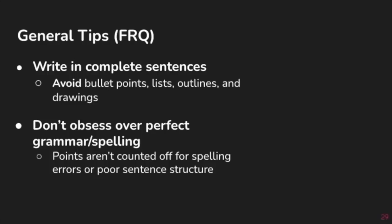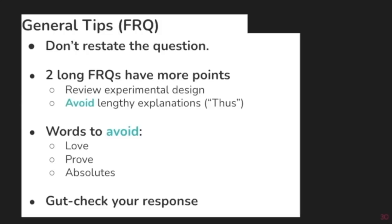We're getting into some general tips. Remember to write in complete sentences. You do have to write in sentence form, but you don't need to write full paragraphs. Make sure you avoid bullet points, lists, outlines, or drawings. Don't waste too much time obsessing over perfect grammar and spelling. Points are not counted off for spelling errors as long as the graders can understand you. Don't waste your time restating the questions. Remember the two long FRQs do have more points, so you want to try to answer those to the best of your ability. You do want to try to answer all of the FRQs, but the longer ones have more points opportunities. Make sure to review experimental design. Avoid lengthy explanations. Write in simple sentences that are straightforward and to the point. Avoid words like prove, and any absolutes like always or never. Make sure to gut check your response to see if it makes sense before you submit your answers.